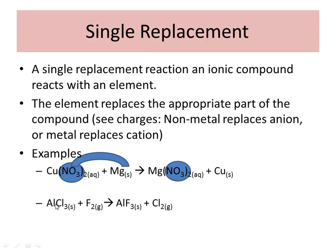On the bottom example, you have aluminum and chloride together reacting with fluorine. In this case, we replaced the anions, so aluminum ends up going with fluorine in the end. You have to make sure you're paying attention — here you have your anion and your non-metal replacing each other.